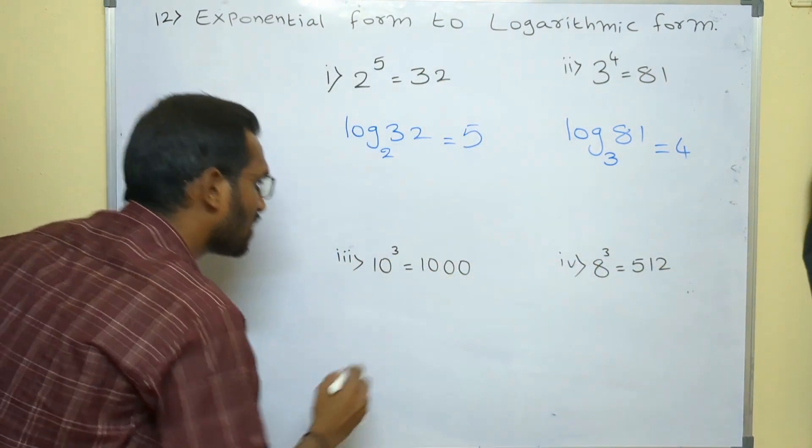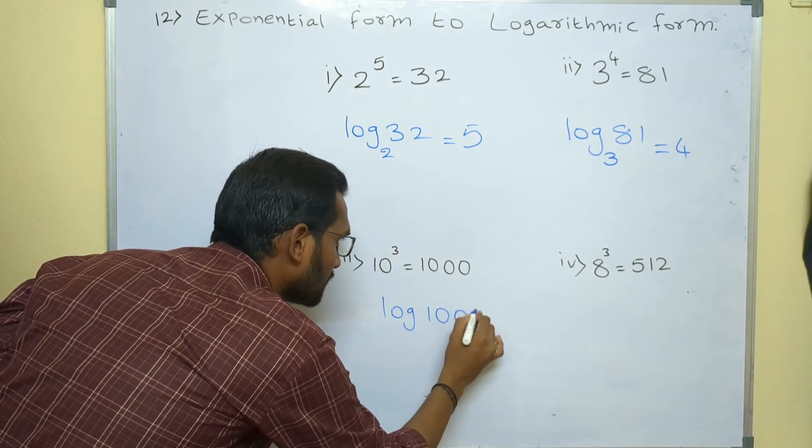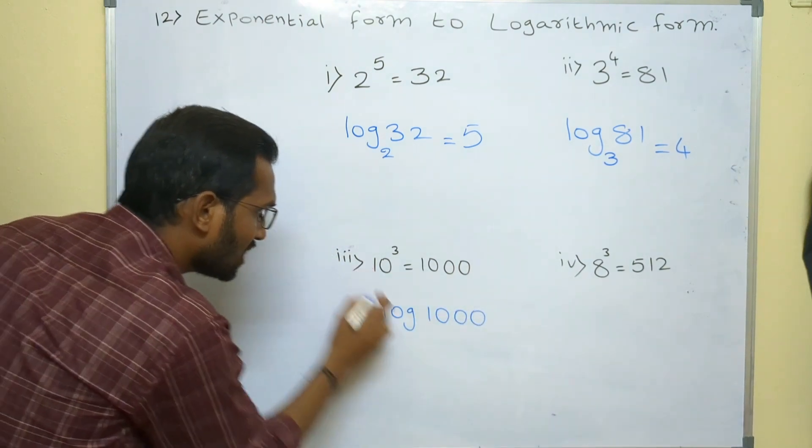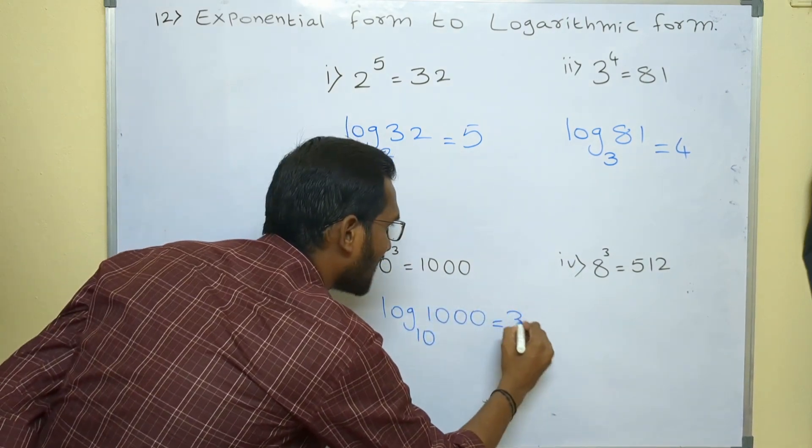10 power 3 equals 1000. For 1000 keep log, log 1000. Base is 10. Write that as it is as the base. Log 1000 base 10 equals to power as the answer.